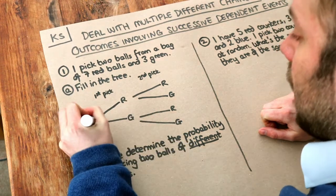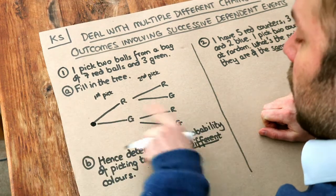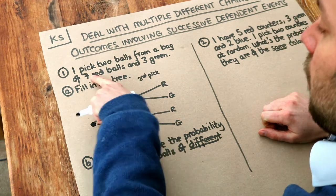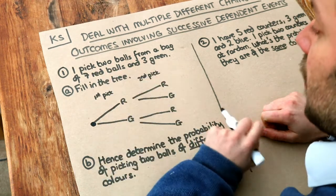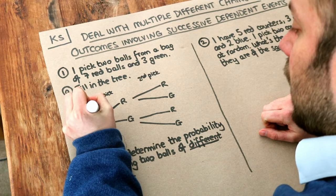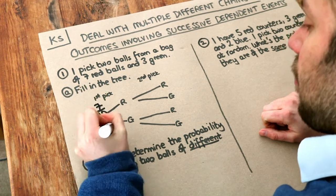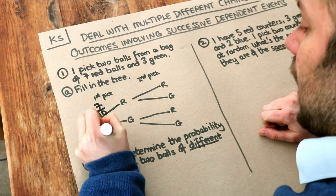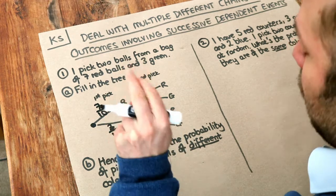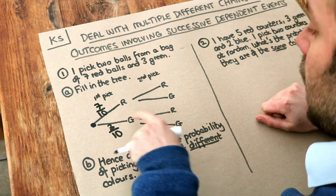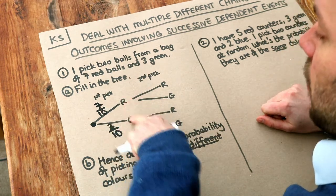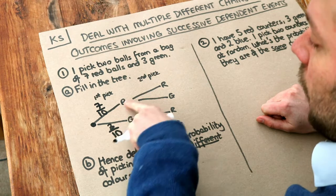We work from left to right. What's the probability of getting red on our first pick? Well, out of the 10 balls, seven of them are red, so it's seven tenths probability of getting red and three tenths probability of getting green. Remember that the probabilities go on the lines — the branches — and the outcomes, whether red or green, go at the end of the line.